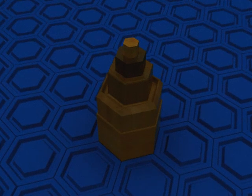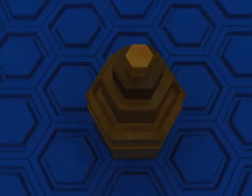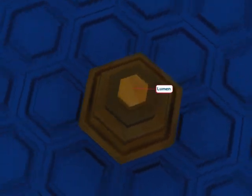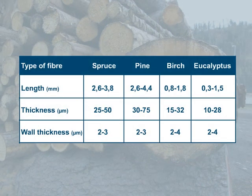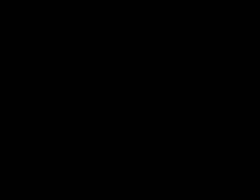What we have left is the hollow cavity of the fibre. We call this the lumen. It's for transporting water and nutrients. Besides the fibre's length and thickness, its wall thickness is also important. Here you can see the length, thickness, and wall thickness of two softwood and hardwood varieties.